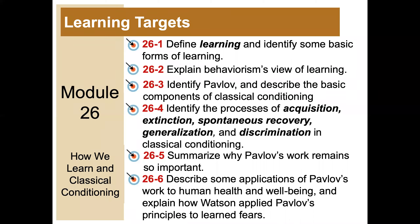The first learning target is to be able to define learning and identify some basic forms of learning. The second is to explain behaviorism's view of learning and to identify Ivan Pavlov — think dogs — and describe the basic components of classical conditioning. You should also be able to identify the processes of acquisition, extinction, and spontaneous recovery.